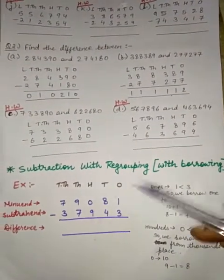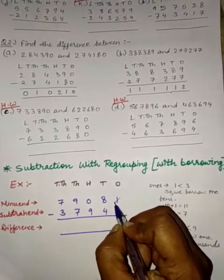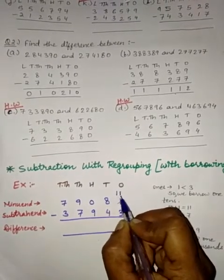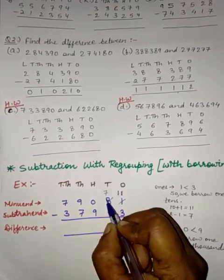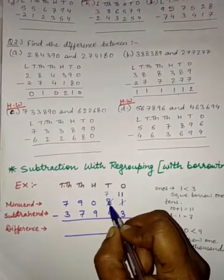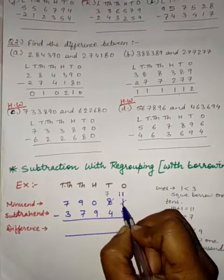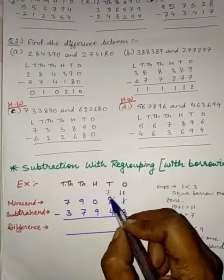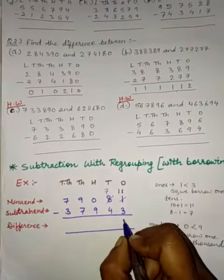So what we will do, we will borrow from 10's place. We will borrow 1 from 10's place. So this 1 will become 11 and this 8 will become 7. Because we have borrowed 1, we will reduce 1. So 8 minus 1 is 7 and here we have added, so it will become 11. So 11 minus 3 is 8.